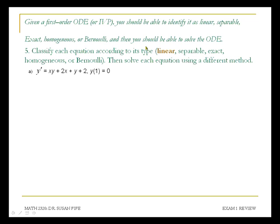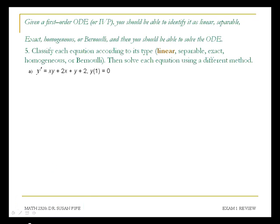On 5a, we have classified this one as being linear. We're going to solve it as a linear ODE. To solve this as a linear ODE, I'm going to want to bring my y terms over to the left side of the equation so that they're right next to the derivative term. I'll factor out a y so that this equation becomes y prime plus negative x minus 1 times y is equal to 2x plus 2.